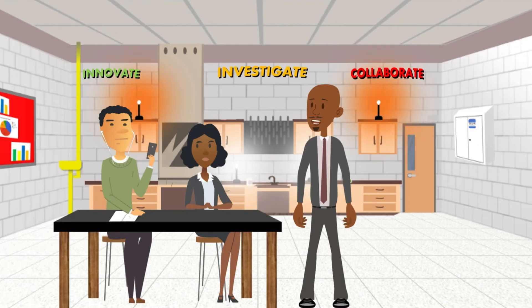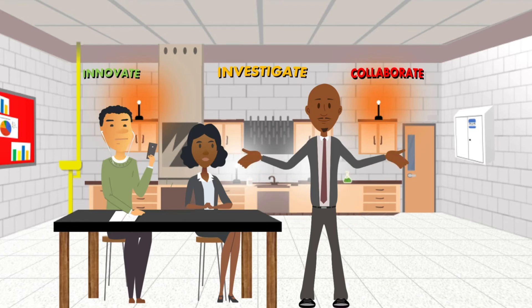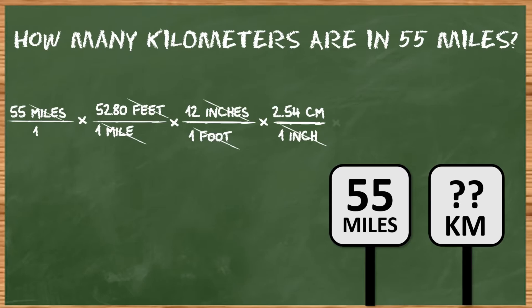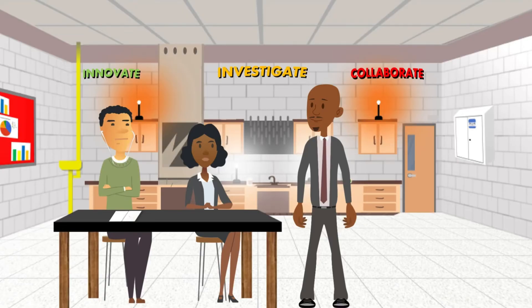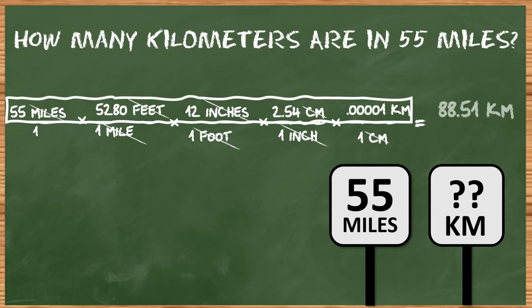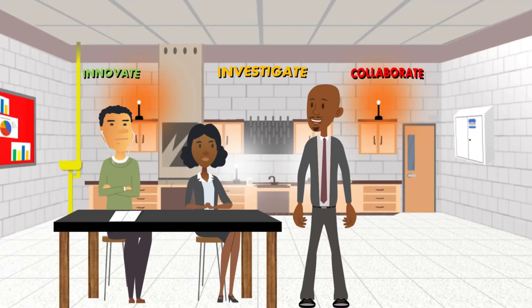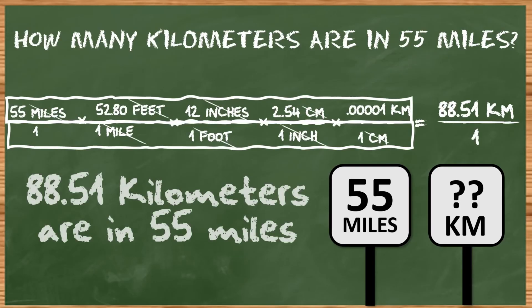I mean, sorta. You'll find with some of them you'll eventually just memorize what they are by doing this so much. But awesome, now we are in centimeters. Do we know how many kilometers are in one centimeter? Oh, we learned that last time. Exactly, 0.00001. Awesome. Now we are in kilometers. Let's multiply across the top. How many kilometers are in 55 miles? 88.51 kilometers. Great.